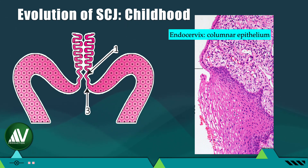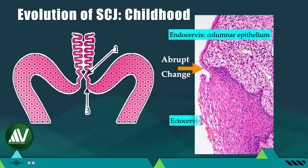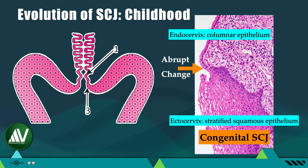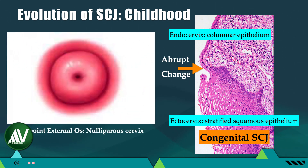Childhood is the only period when the columnar epithelium of the endocervix abruptly changes to stratified squamous epithelium. It is also called the congenital squamo-columnar junction, as it was formed during fetal life. Thus, in childhood the cervix appears pink and smooth with a pinpoint os.